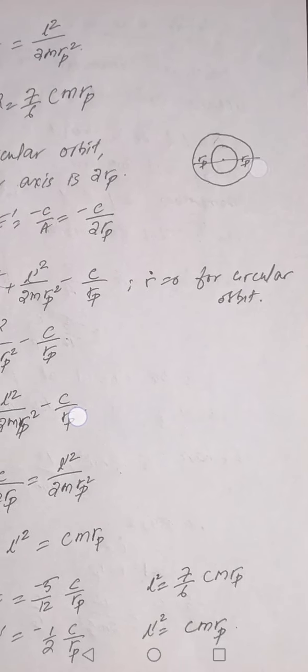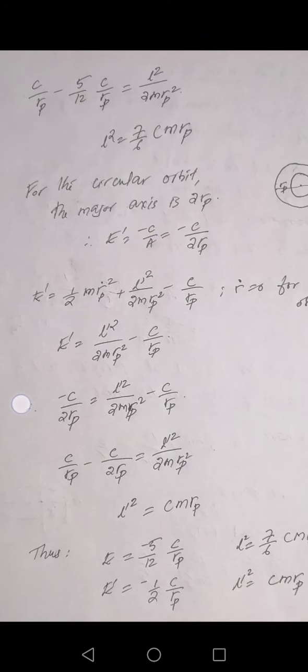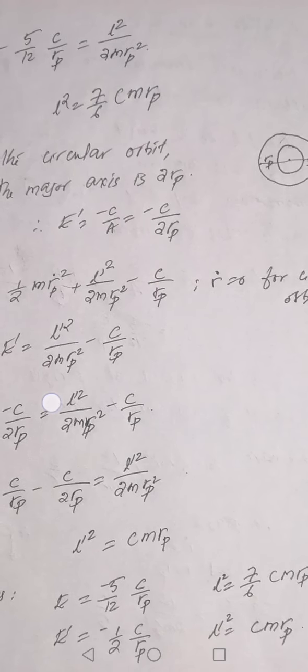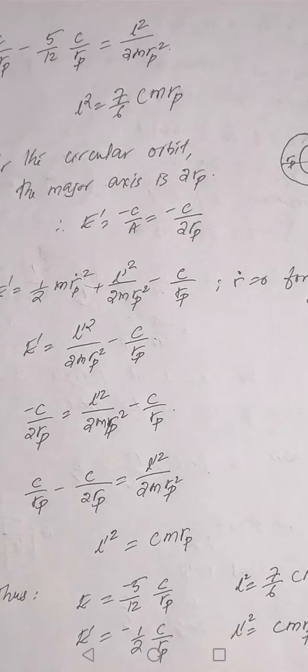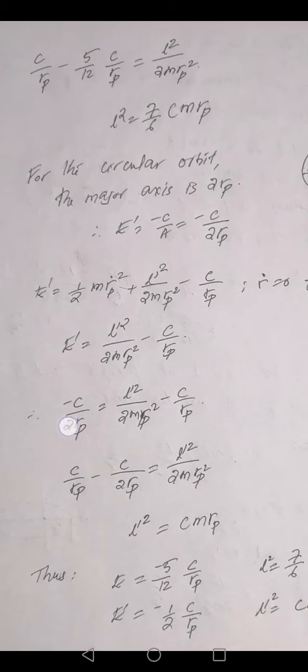For the new circular orbit with radius Rp, the major axis is the diameter, which is Rp + Rp = 2Rp. Therefore the new energy E prime = −C/A = −C/(2Rp). Also, E prime = (1/2)MṘp² + L prime²/(2MRp²) − C/Rp, substituting R = Rp, L = L prime, E = E prime. For a circular orbit, Ṙ = 0.